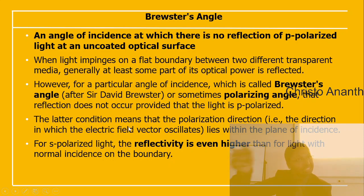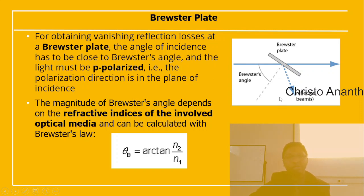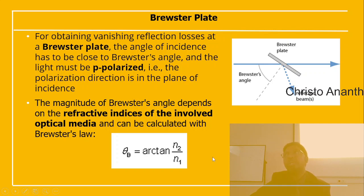There is also s-polarized (scatter-polarized) light, for which reflectivity is even higher than for normal incidence. For a Brewster plate, the angle of incidence must be close to Brewster's angle and the light must be p-polarized to achieve vanishing reflection loss. The magnitude of Brewster's angle depends on the refractive indices of the involved optical media: θ_B = arctan(n₂ / n₁).